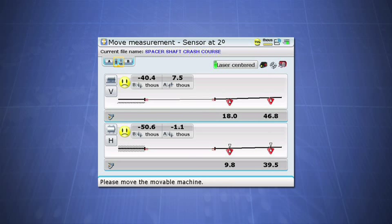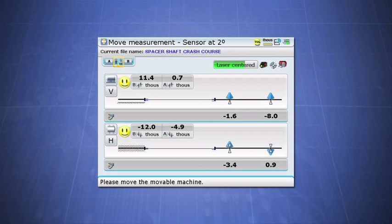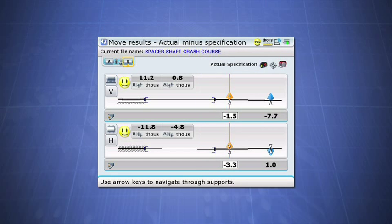Live Move allows you to monitor the alignment as you make positional adjustments to the machines. This is the only system that monitors moves in the vertical and horizontal direction at the same time.